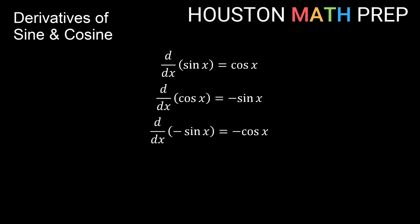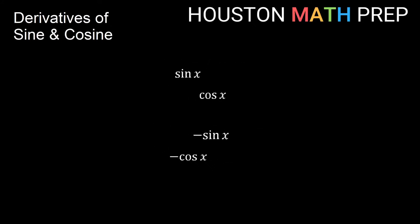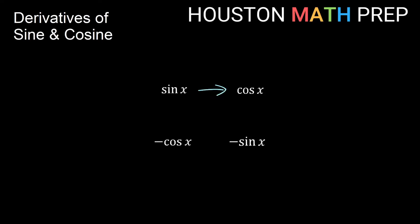That gives us negative cosine x. If we take the derivative yet again — the derivative of negative cosine x — think of this as negative 1 out front times cosine x. We know the derivative of cosine x is negative sine x, so this part becomes negative sine x. But because we already have a negative out front, that gives us positive sine x. Starting with sine x and taking the derivative four times gets us back to sine x. This pattern holds no matter which function we start with: sine x → cosine x → negative sine x → negative cosine x → back to sine x, cycling every four derivatives.